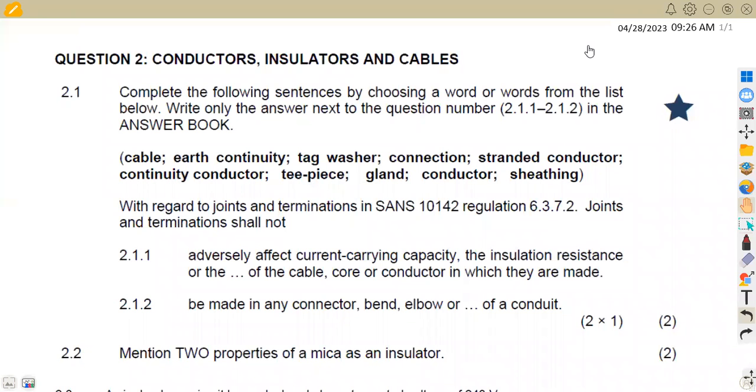Hello guys, welcome back to Amazon African Motives. Still on Electrical Trade Theory Level N2. So in this case, we are going to be focusing on the part of conductors, insulators, and cables. In this case, that is from the past paper of November 2022.